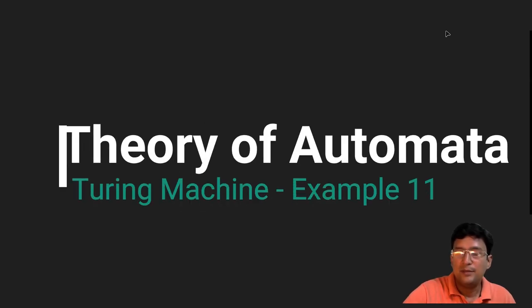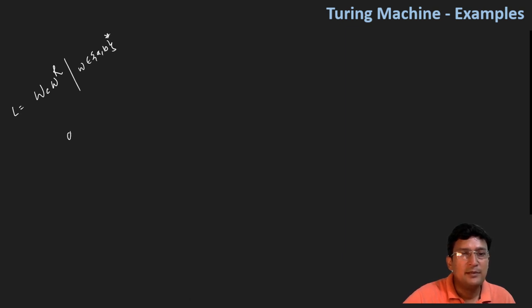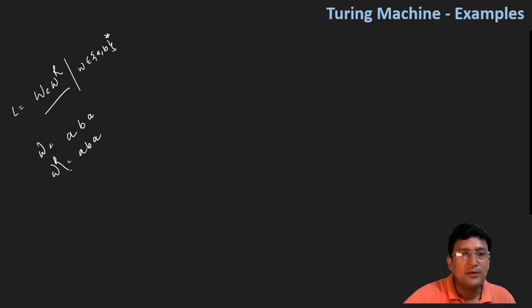We'll take more examples for Turing machines. Let's say the language is WCW-reverse, where W contains elements A and B only. So let's say I have a string W = ABA, and W-reverse would also be ABA. So the full string in the language WCW-reverse would be: A, B, A, C, A, B, A. This is also a special type of palindrome with separator C.